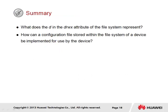In summary, we have a couple of questions. The first asks: what does the D in the DRWX attribute of the file system represent? The D in the attribute list represents a directory in the storage location, in which multiple files may be located. The cd command may be used together with the listed directory to specify the path in order to reach any files contained within the directory. Secondly, how can a configuration file stored within the file system of a device be implemented for use by the device? The startup saved configuration command, followed by the name of the configuration file to be used, is specified along with the storage location of the saved configuration file, in order to identify the configuration file as the file to be used at next startup. The display startup command can then be used to verify that the command has taken effect.